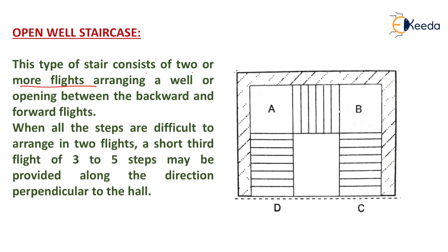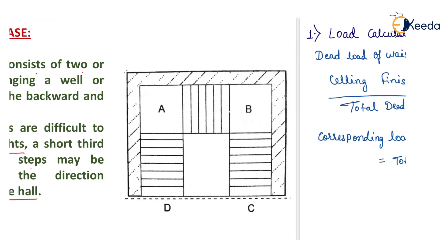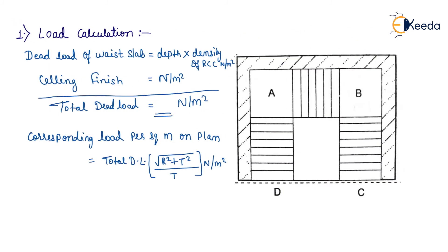When all the steps are difficult to arrange in two flights, a short third flight of three to five steps may be provided along the direction perpendicular to the hall. Now first of all, we will calculate load calculation in the design steps.